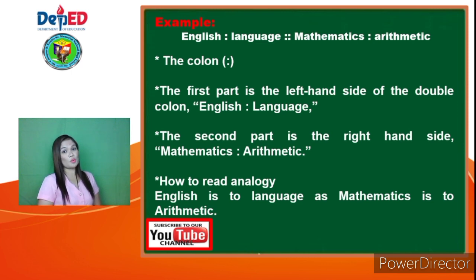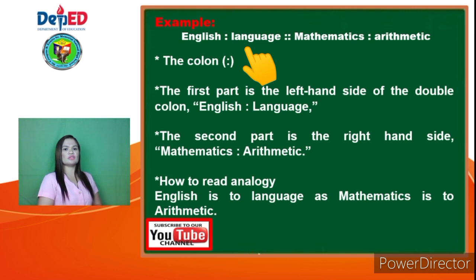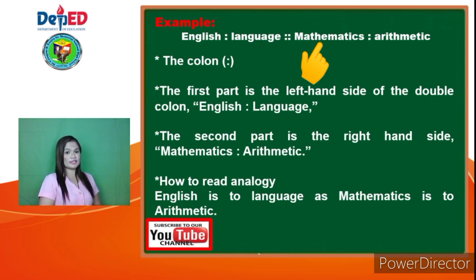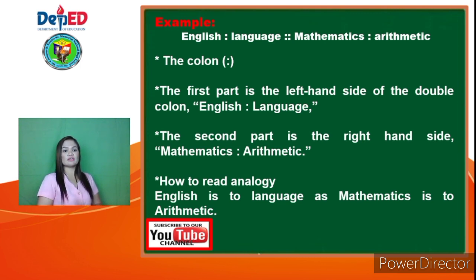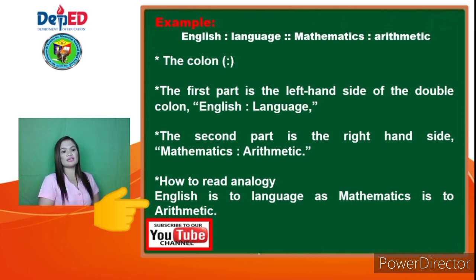Do you notice the punctuation mark used? The colon is used to split the analogy into two parts. The first part is the left-hand side of the double colon — that is, English is to language. And the second part is the right-hand side, which is mathematics is to arithmetic. Keep in mind that the first set of words presents a relationship that is the same as the second set of words. One possible way to read or verbalize an analogy is: English is to language as mathematics is to arithmetic.